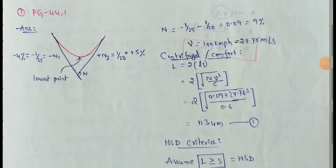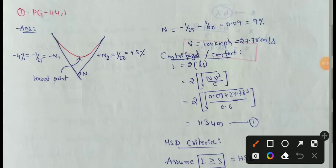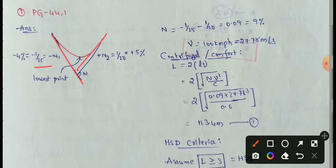Next topic: valley curve design. We will discuss a solved example problem in this video. In the previous video, we discussed the valley curve design criteria. The valley curve is to be designed for a national highway in rolling terrain where the falling gradient is 1 in 25 and the rising gradient is 1 in 20. The design speed is 100 km/h. The C value (rate of change of centrifugal acceleration) is 0.6 m/s³ as per IRC.